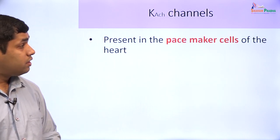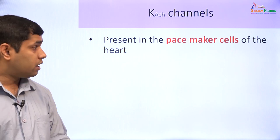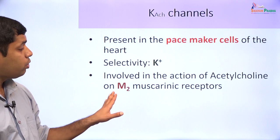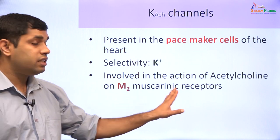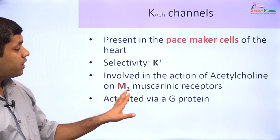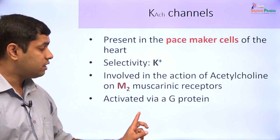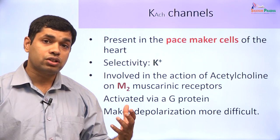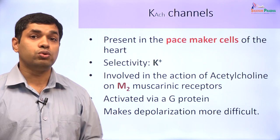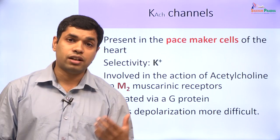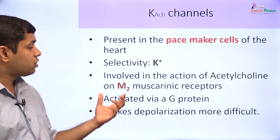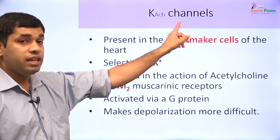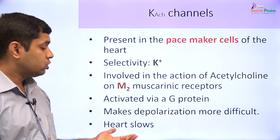The K-ACH channel is present in the pacemaker cells of the heart. It is selective for potassium and this is how acetylcholine acts via M2 muscarinic receptors. Acetylcholine acting via M2 muscarinic receptors activates a G protein, which makes depolarization of the heart more difficult and therefore slows down the heart rate. So acetylcholine slowing down the heart rate is because of its action on M2 muscarinic receptors, which act via a G protein on the K-ACH channel, therefore slowing down the heart.